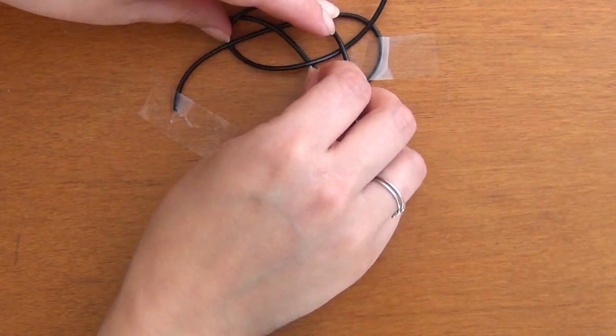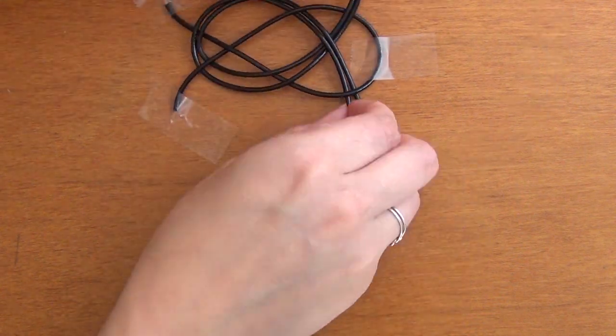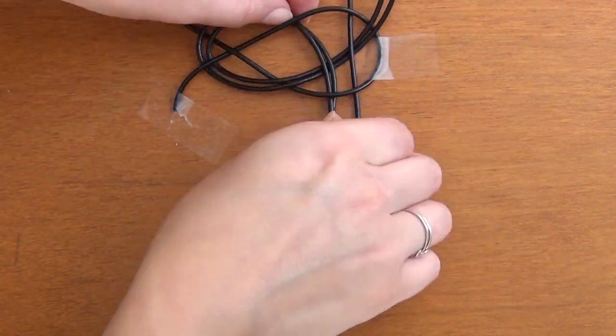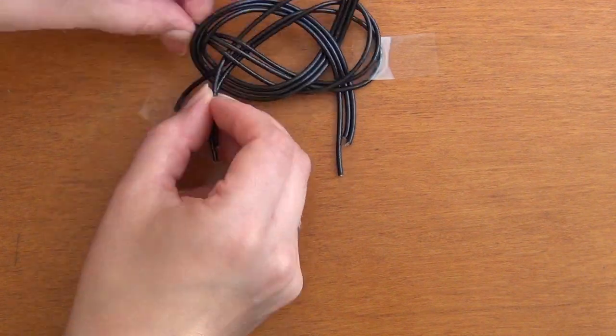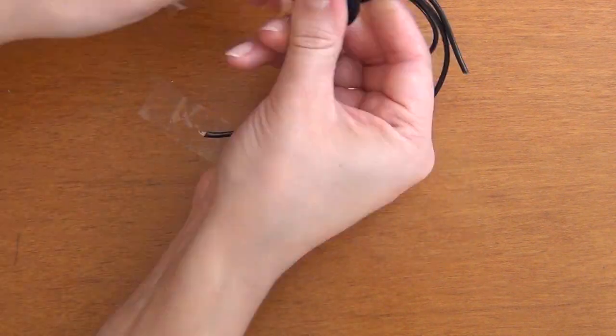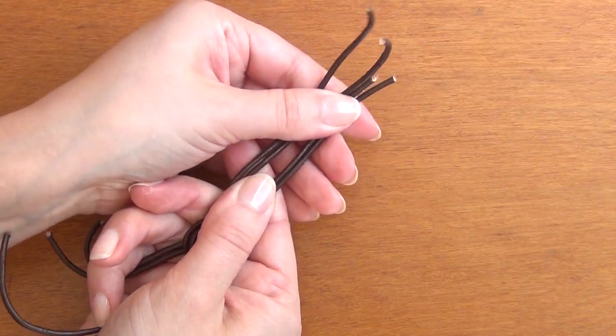If all of that was a little bit too tricky, you can also try holding everything down with three pieces of tape and then adding in your additional laces. Here on this bracelet I've added in three laces.